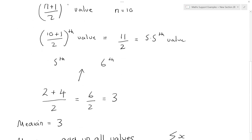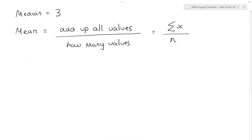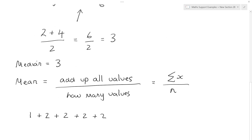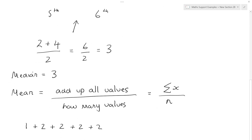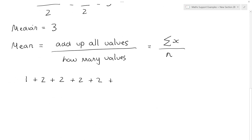So we're going to have to do 1 plus 2 plus 2 plus 2 plus 2 — that adds up the first 5 values. We also have plus 4, plus 4, plus 4, plus 7, plus 7. This is the sum of all our values.